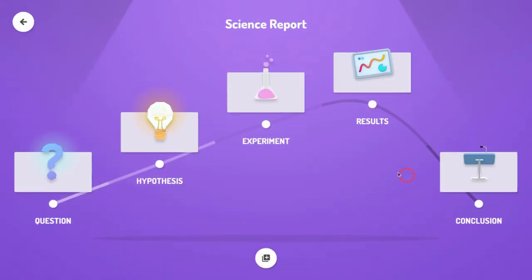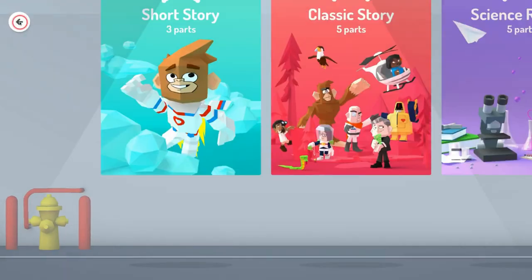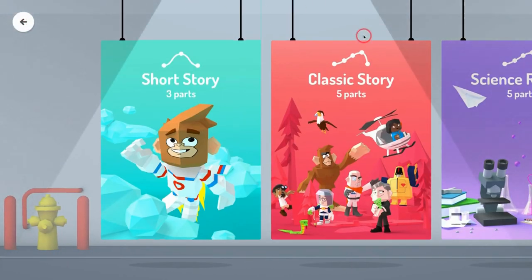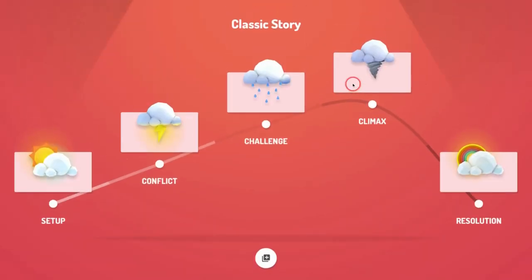And look at the five parts. If you really want to be basic, you can do the short story which just has beginning, middle, and end. But the classic story is a great way to teach kids about storytelling because it explains that there's got to be five scenes from setup to resolution.